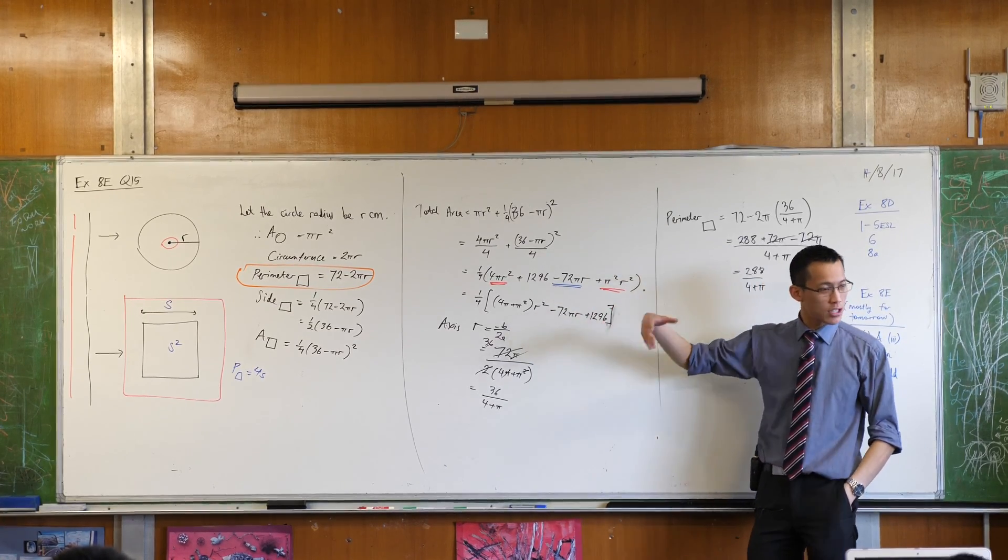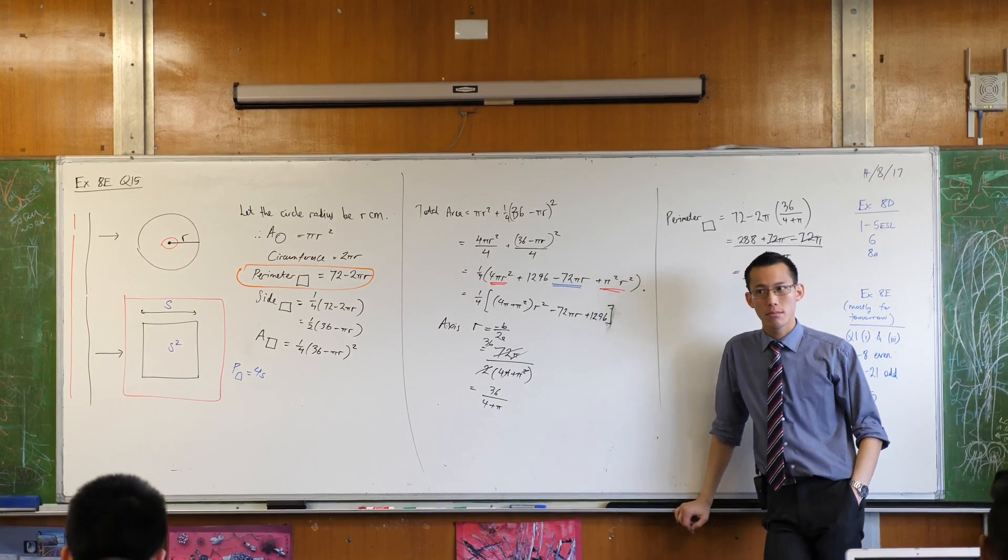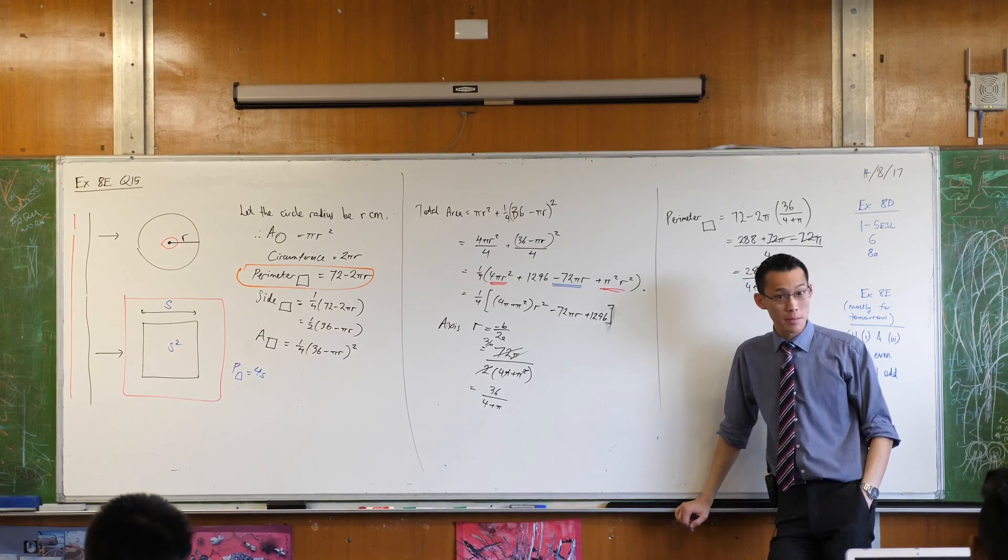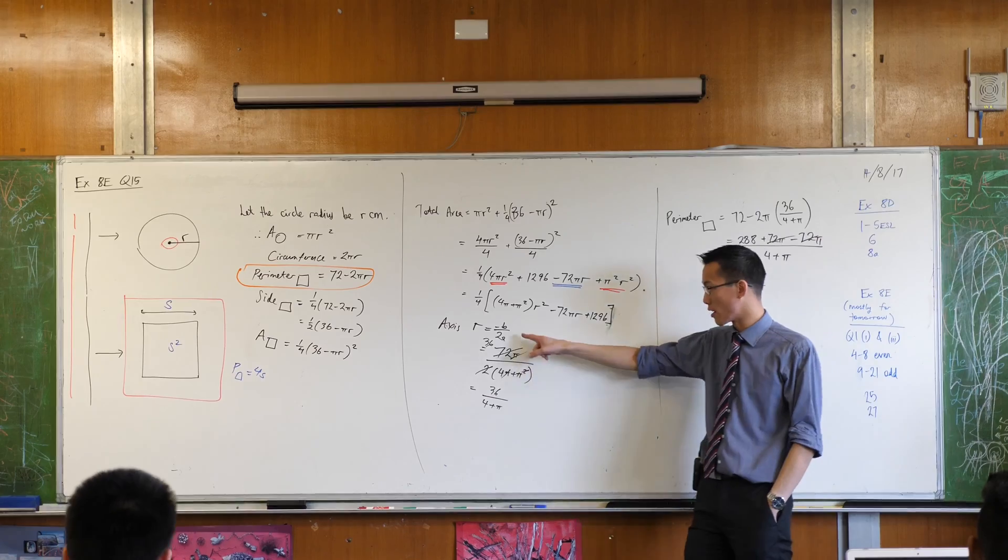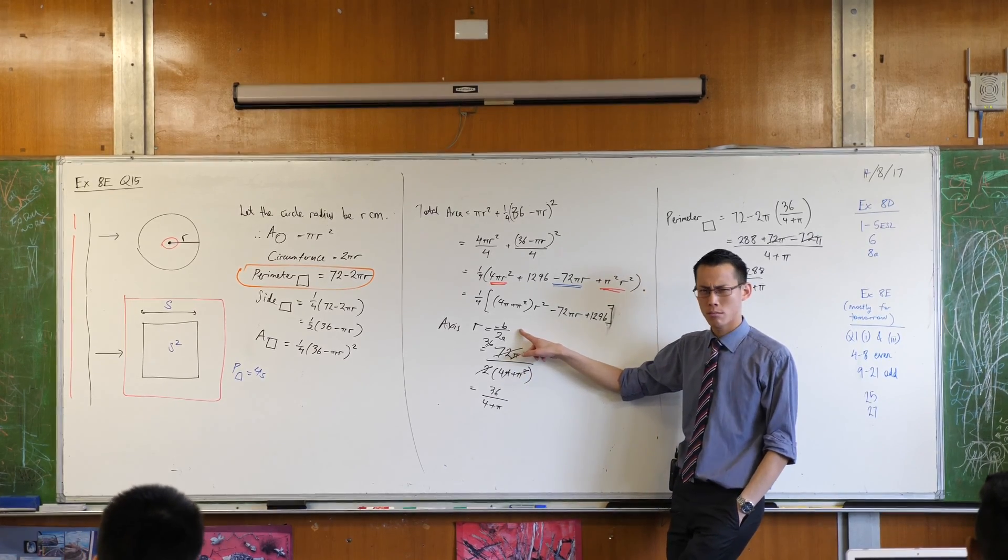What kind of, like is this concave up or concave down? It's concave up. So the minimum is going to occur at the axis of symmetry. So I went straight to the axis of symmetry. Does that make sense?